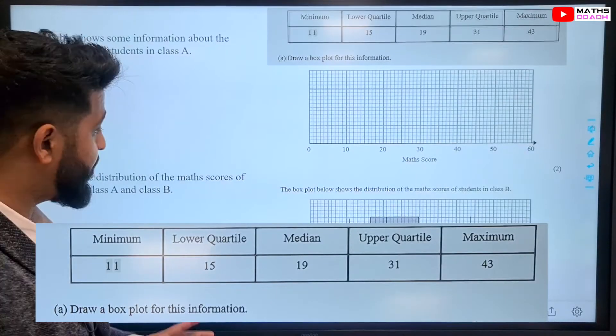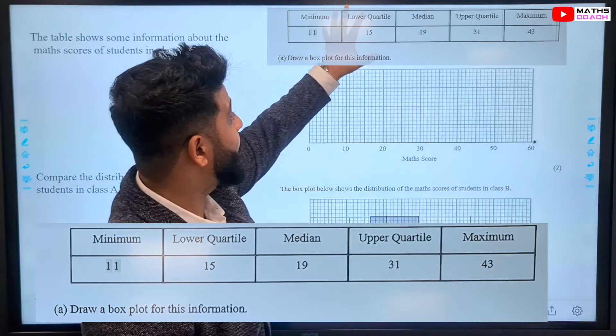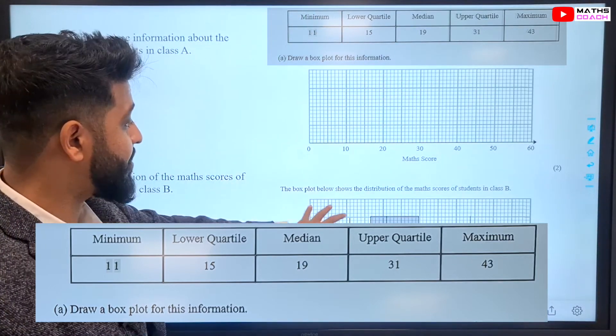Now, the final question is comparing two box plots. The first part of this question is asking us to put this information into here. And then, the second part of the question asks us to compare the two.